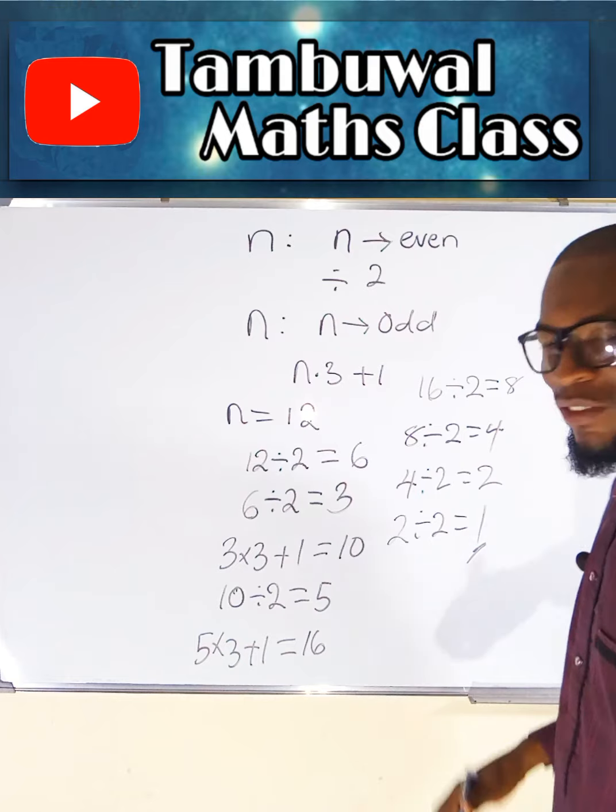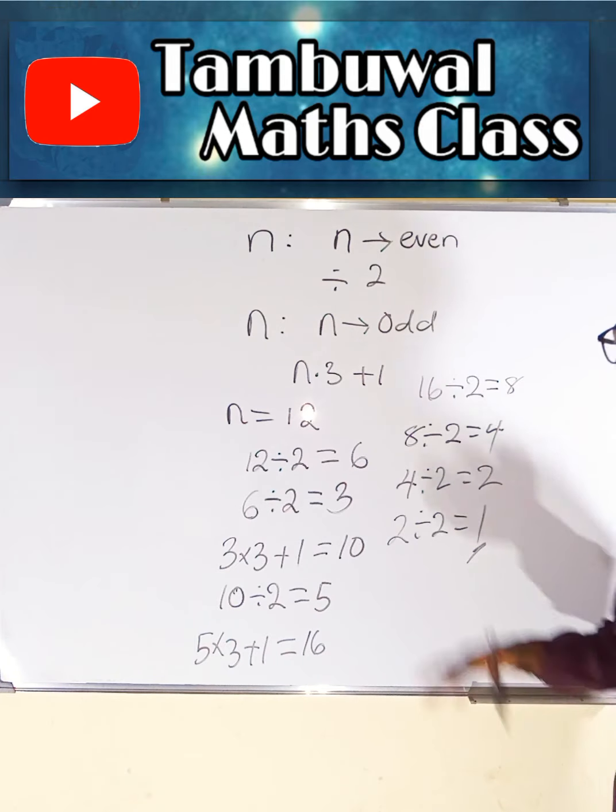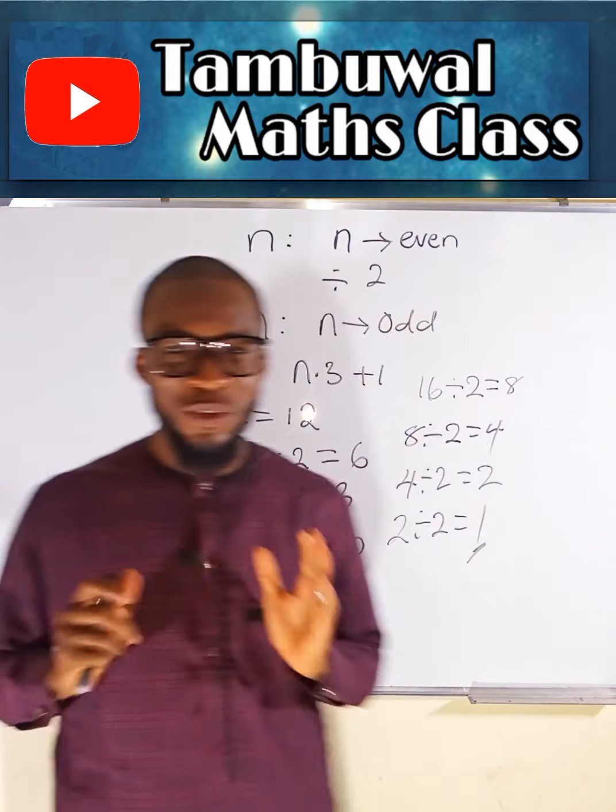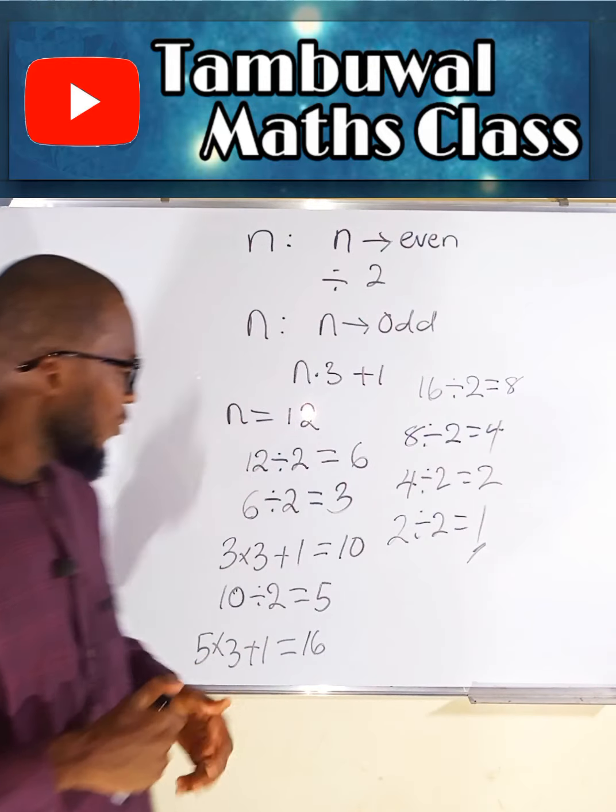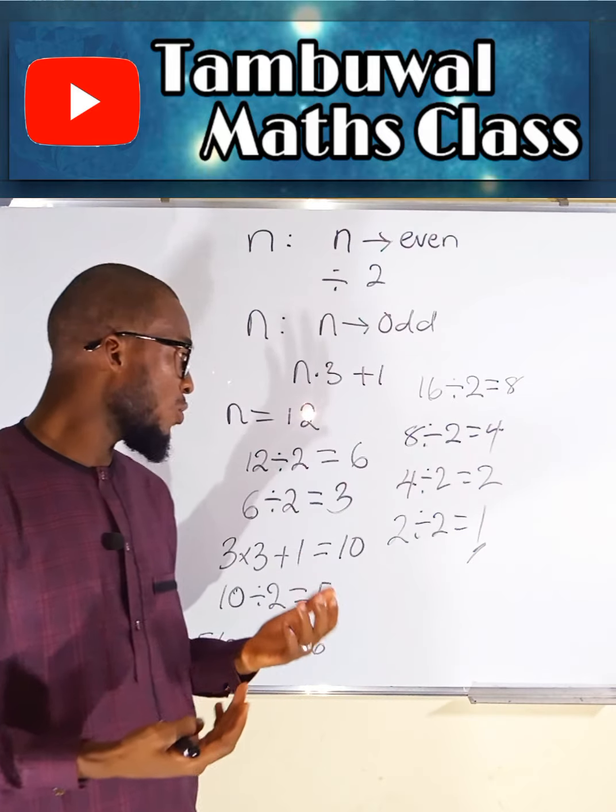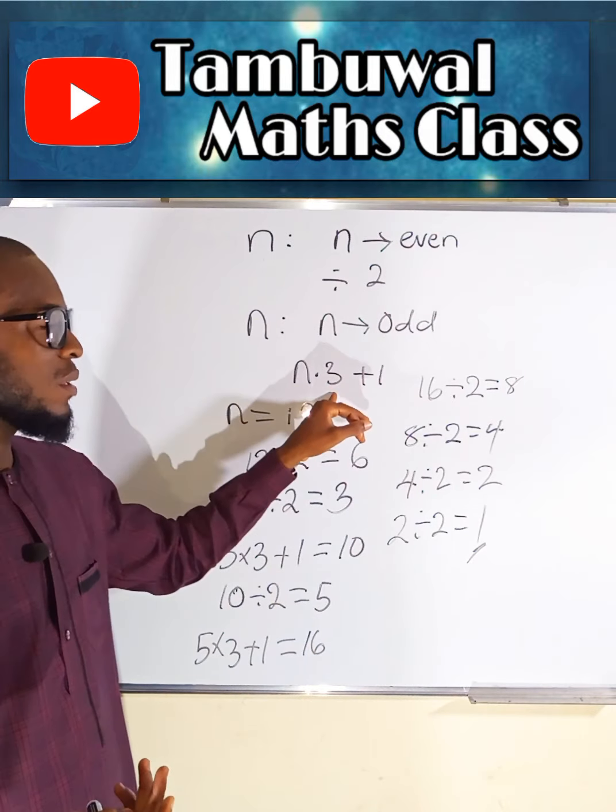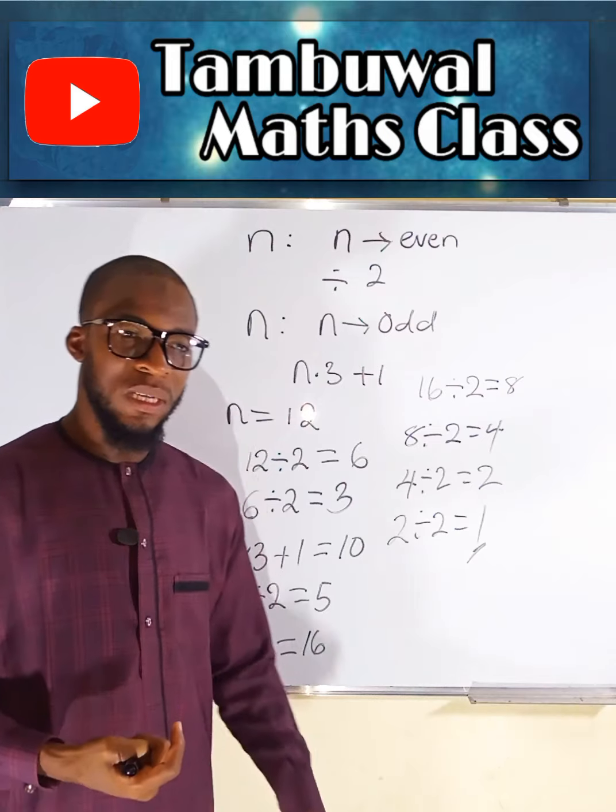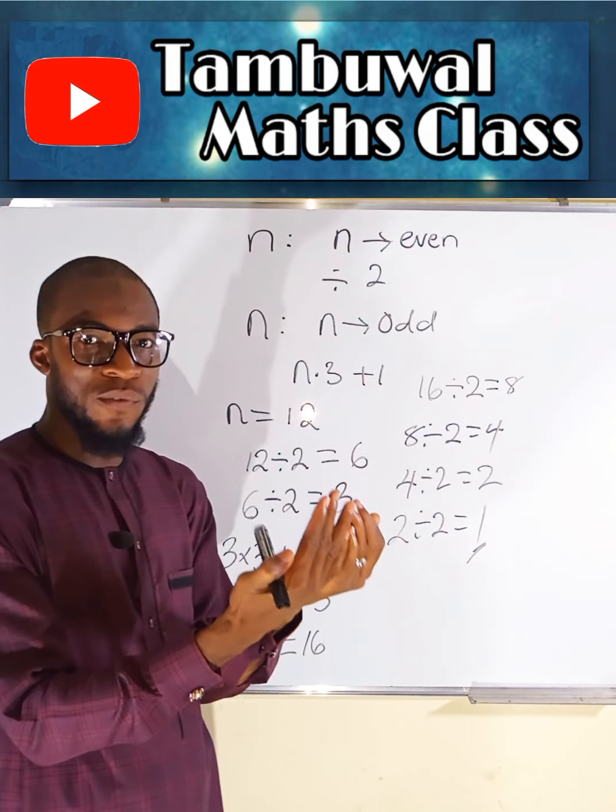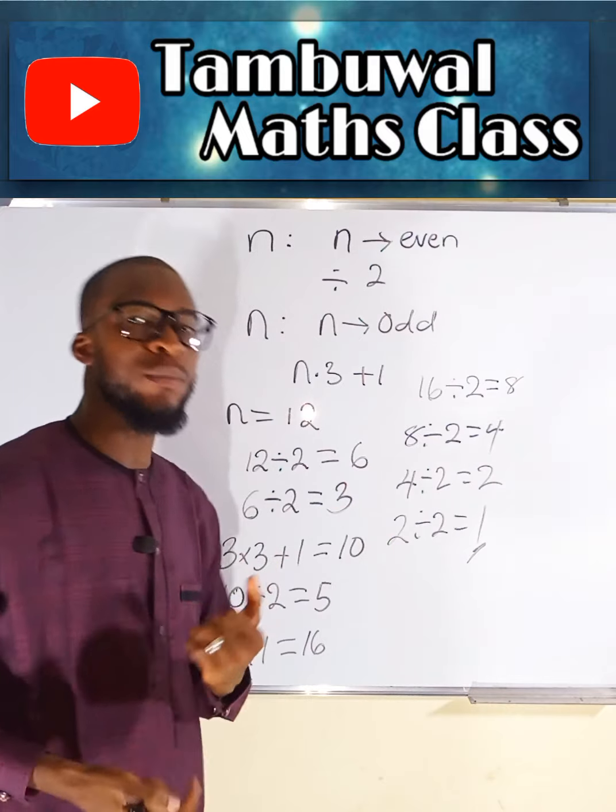Finally, our main target is to arrive at 1, and this is just the rule of the game. So I want you to choose your own unique number. Follow the same pattern. If the number you have chosen is odd, you multiply it by 3 and add 1 to the result. Examine what you have obtained. If what you have obtained is even, divide it by 2.